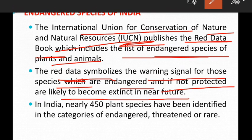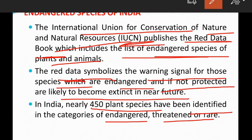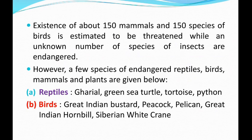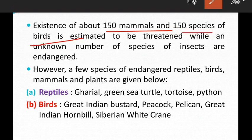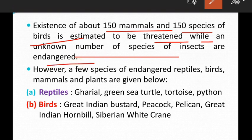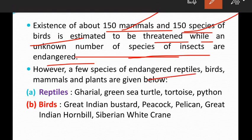In India, nearly 450 plant species have been identified in the category of endangered, threatened, or rare. The existence of about 150 mammals and 150 species of birds is estimated to be threatened, while an unknown number of species of insects are endangered. Endangered reptiles, birds, mammals and plants are listed below.